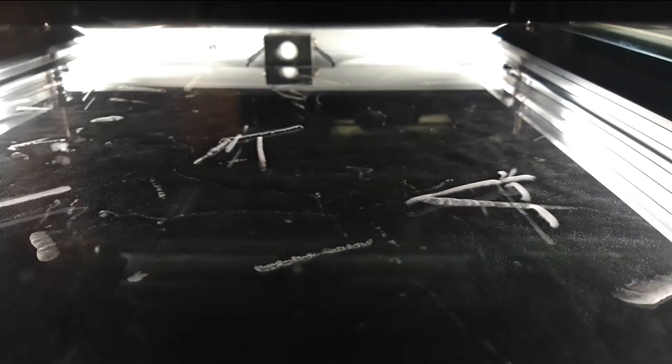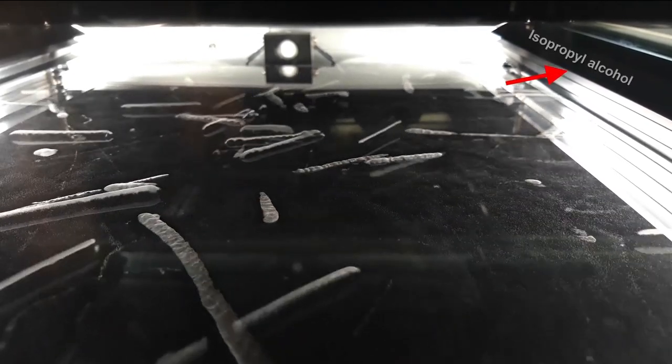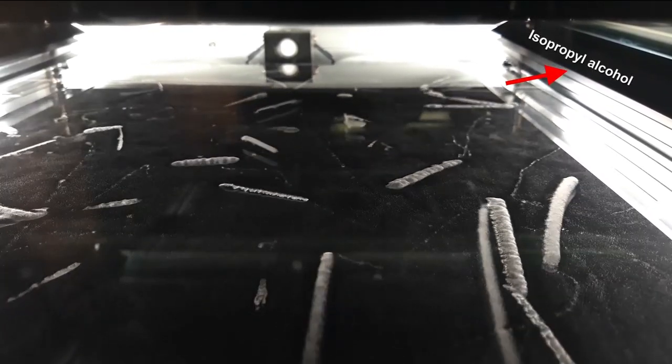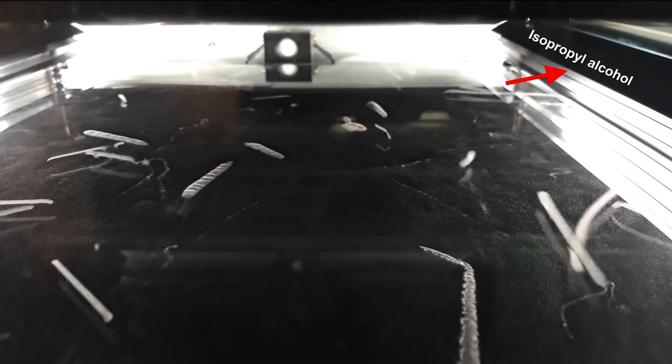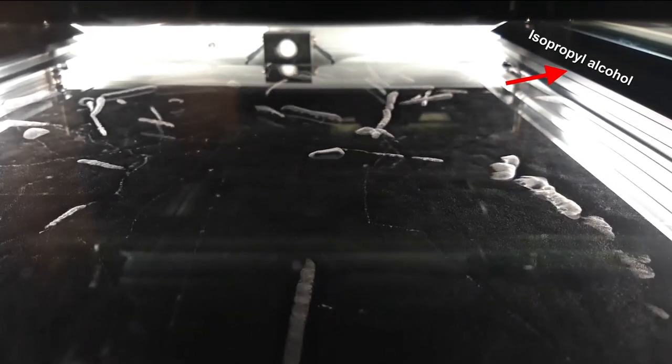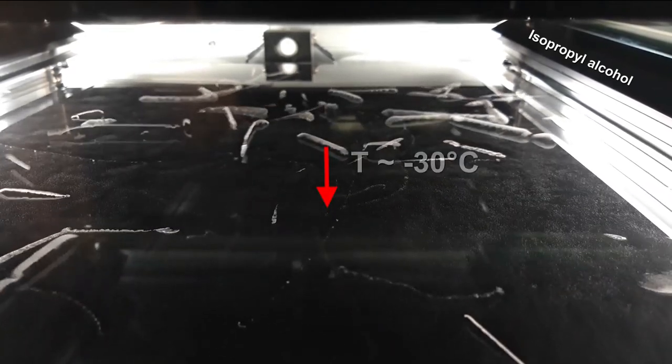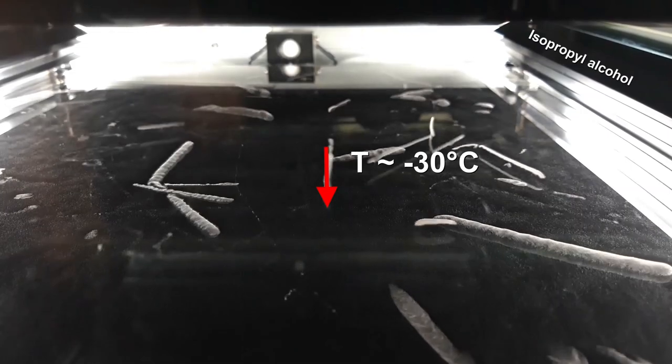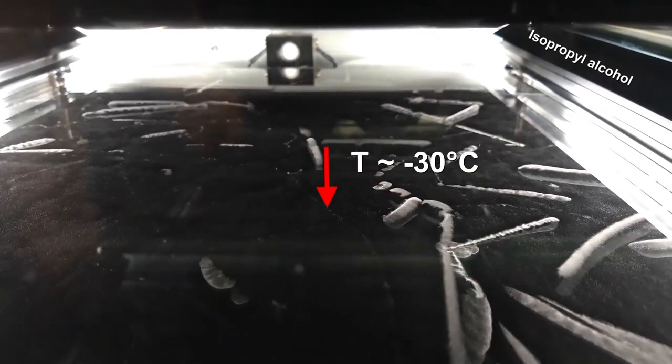In the cloud chamber that is shown here, a heated channel of isopropyl alcohol is placed at the top. This evaporates and disperses in the air within the chamber. The plate at the bottom is cooled to around minus 30 degrees C, so the mixture of air and alcohol is cooled close to it.